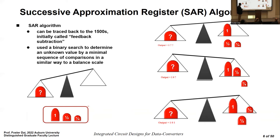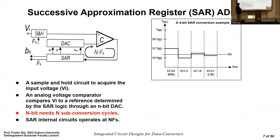In the second step, add one-half pound. If one plus one-half is heavier than the unknown weight, the second bit is zero. In the third step, remove the one-half and add a quarter pound to compare. The reference for the next step is determined by the previous step's result — this is key to the algorithm. The process can be continued to achieve any desired resolution.